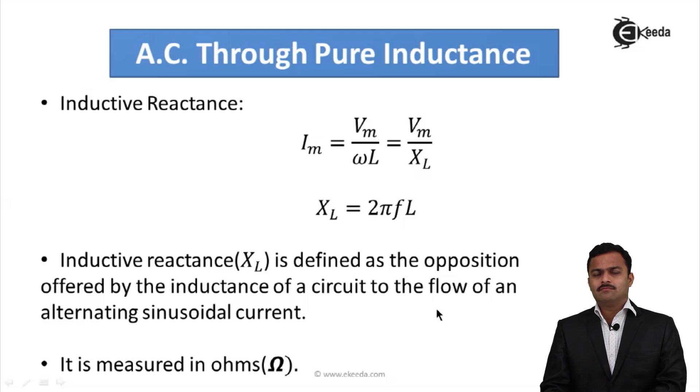It is just like a resistance, but it is the opposition offered by inductor of a circuit to an alternating quantity. And obviously, as I said earlier, it is like a resistance, its measurement can be done in ohms.